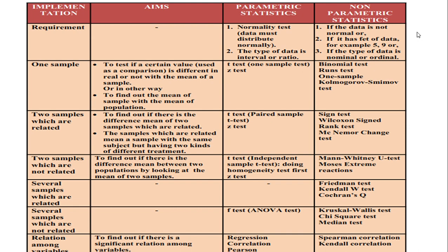After the homogeneity test shows the data are homogeneous, you can proceed with the independent sample t-test. But if the normality test shows the data do not distribute normally, you go directly to non-parametric statistics. For two unrelated samples, there are two non-parametric tests: the Mann-Whitney U test and the Moses extreme reactions test.